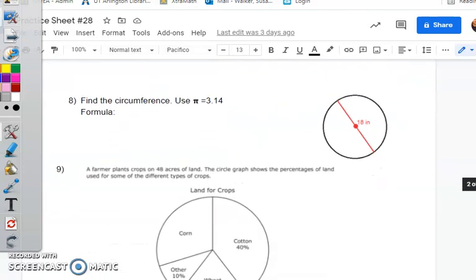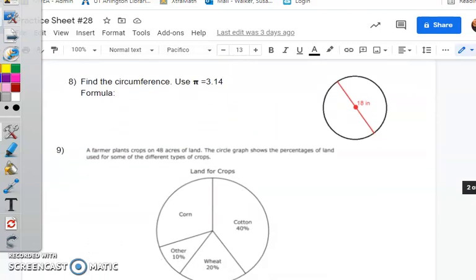I'm not going to do number eight with you, except to remind you that we are doing circumference. Find the formula. Don't do pi r squared. That's area. And I'm going to remind you what is 18 on this. Is it radius or is it diameter? Hopefully you know it's diameter. Diameter is the bigger word. Diameter is the bigger distance.